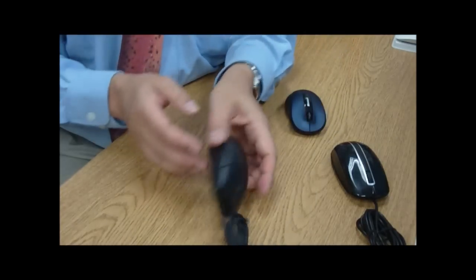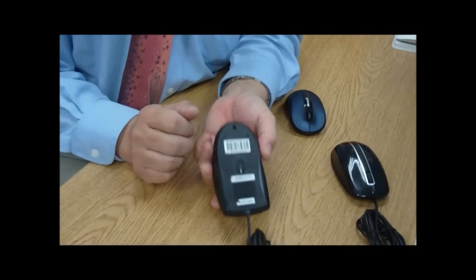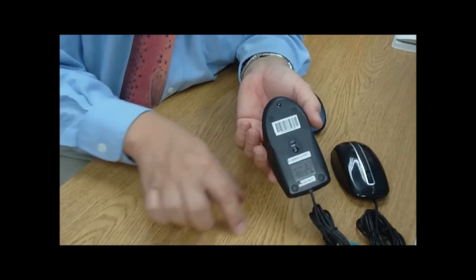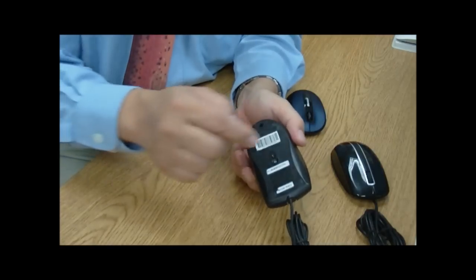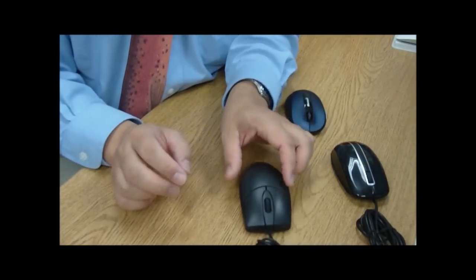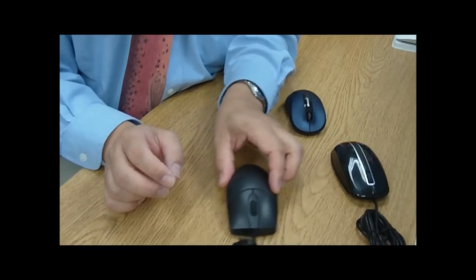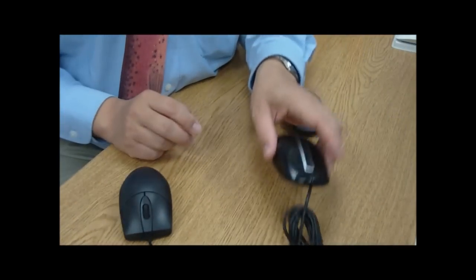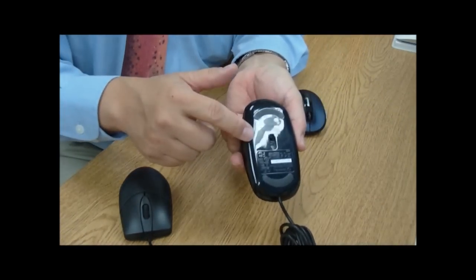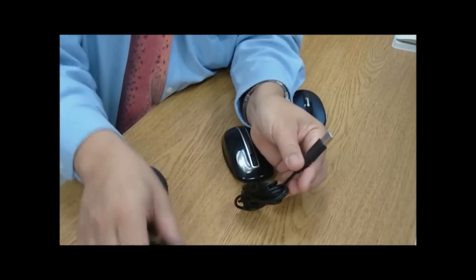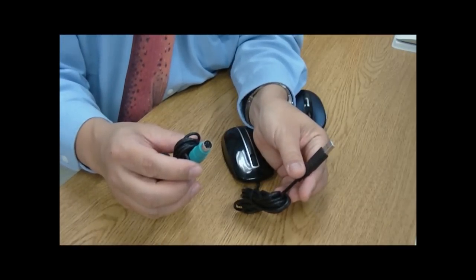The next one that came out introduced LED technology. Basically we have a little LED flashlight in here that would illuminate the surface that you're rolling the mouse over. Inside you have a very low resolution camera that keeps track as it takes photographs of the mouse position. You have the same type of technology here, LED but with a USB connector because these legacy PS2s are kind of fading away.